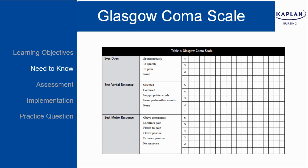Here is the Glasgow Coma Scale so you can review it. In the first column, you're checking whether the eyes open spontaneously, to speech, to pain, or not at all, and you get a score for each of these things that they can or cannot do — best verbal response and best motor response. If you add up their numbers and the score is less than 7, the person is comatose. 15 is alert and oriented.